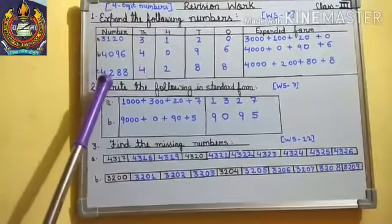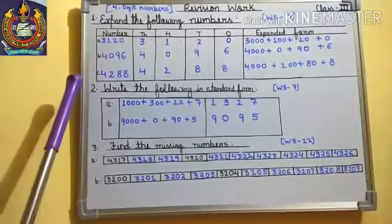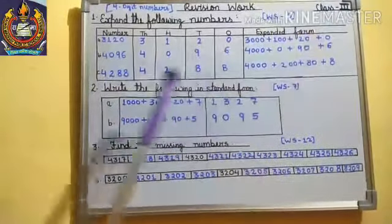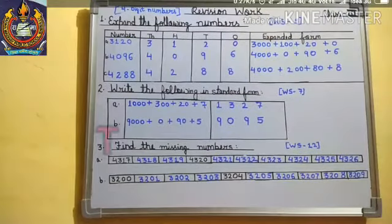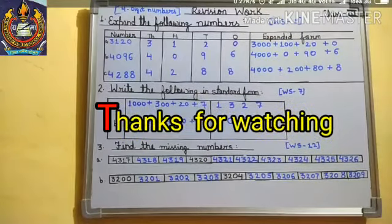So our expanded form is four thousand plus zero plus ninety plus six. In third position, four thousand two hundred and eighty-eight is given, so we will repeat the same procedure. We will solve the next two questions in our next class.